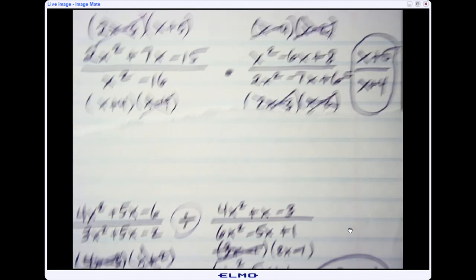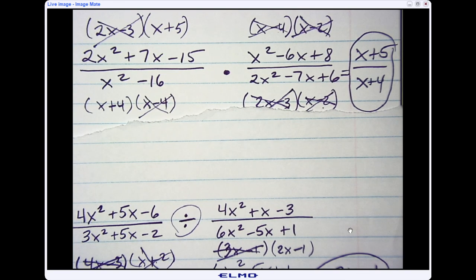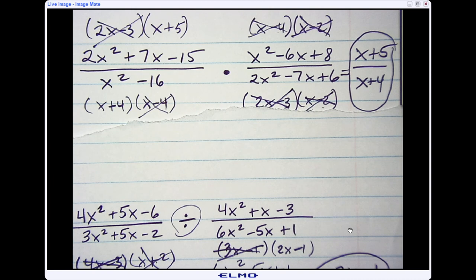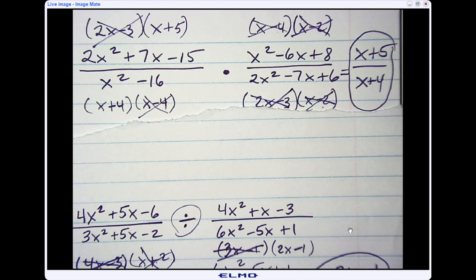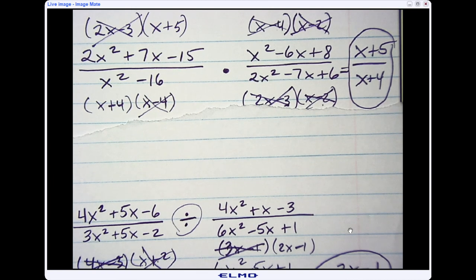So again, you'll see these types of questions on my quiz. I have two of them like this where, again, you first want to factor everything and then cross out what's exactly the same in the top and bottom as a diagonal or above it.